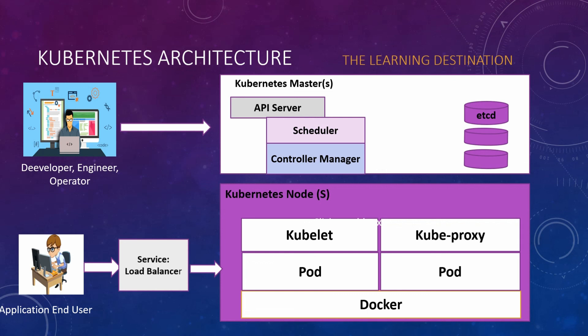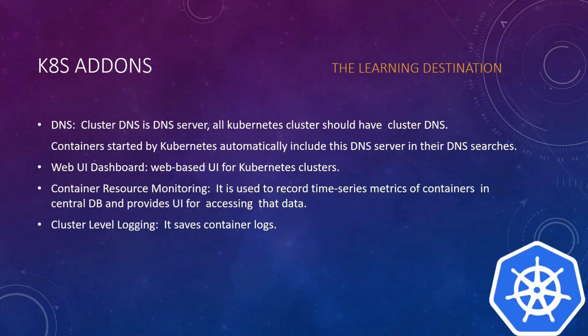There are some add-ons on Kubernetes. DNS: Cluster DNS is a DNS service — Kubernetes has its own DNS server and all Kubernetes clusters should have cluster DNS. Containers started by Kubernetes automatically include this DNS server in their DNS searches. Then there is a web-based user interface dashboard. Container resource monitoring records time-series metrics of containers in a central database and provides a UI for accessing that data. Cluster-level logging saves the container logs.